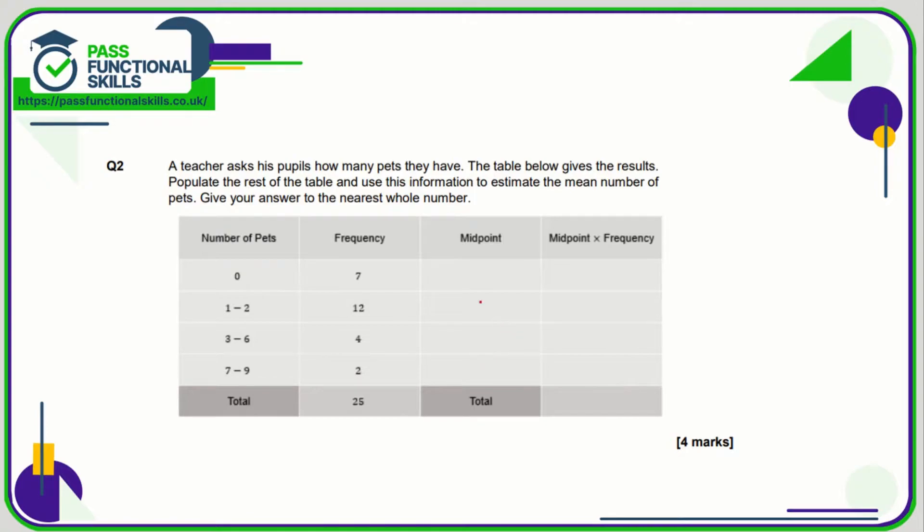Question two. Again, let's just work out the midpoints. So there's no midpoint for zero, so that's just zero, 1.5, 4.5, and 8. And now we just need to do midpoint times the frequency, so we're going to get 0, 18, 18, 16.